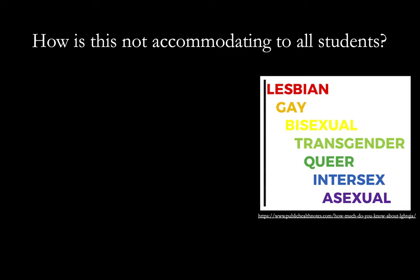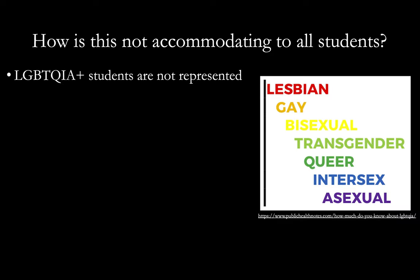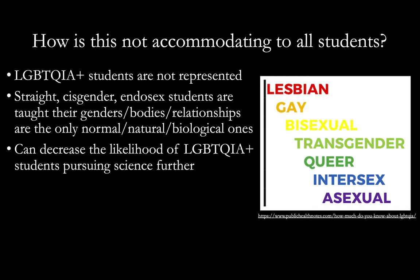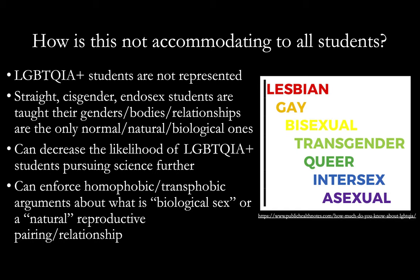So how is this not accommodating to all students? It doesn't include lesbian, gay, bisexual, transgender, queer, intersex, or asexual people as part of human biological diversity at all, meaning students from these identity groups do not see themselves represented. This teaching can also enforce for our straight, cisgender, and endosex students that their genders, bodies, and relationships are the only ones that are normal, natural, or biological. It can decrease the likelihood of LGBTQIA plus students pursuing science further, and for all students it can reinforce homophobic and transphobic arguments that rely on biology to define the right way to have a sex or gender. These arguments are used to pass laws and policies which deny LGBTQIA plus individuals access to medical care, legal rights, and life chances overall.